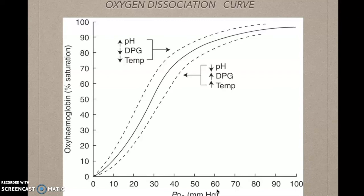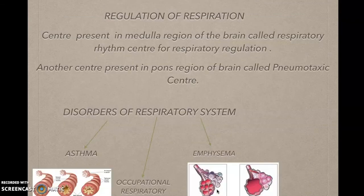Next is the regulation of respiration. There are two centers which regulate our respiratory system. The first is present in the medulla region of our brain — the respiratory rhythm center. The second is present in the pons region of our brain — the pneumotaxic center. These centers are activated by an increase in the level of carbon dioxide and H+ ions, which then regulate our respiration.